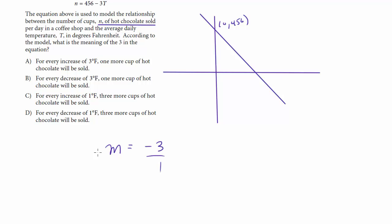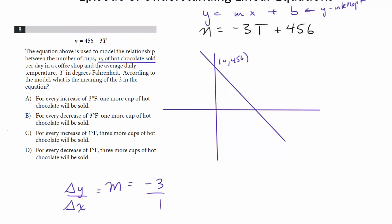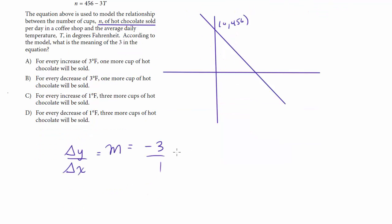Now, what does this mean? This is typically the change in y over the change in x. But in this case, we don't have y and x. We've got different letters. So what is the y? The y in this case is n. And the x is t. So this is the same thing as the change in n over the change in t.